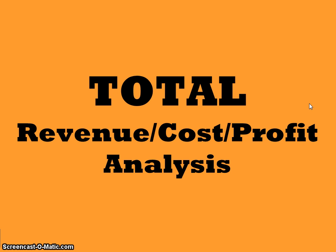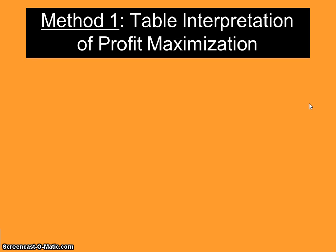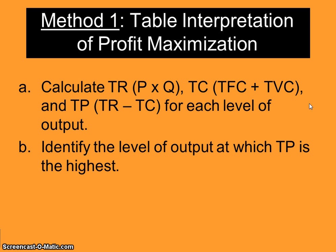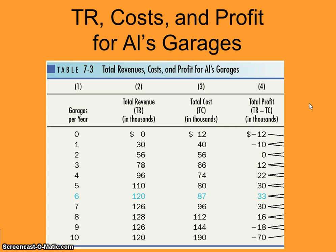Method number one is total revenue, cost, and profit analysis — the table interpretation. With this method, you calculate total revenue, total cost, and total profit for each level of output, and identify the level of output with the highest total profit. You're just doing calculations in a table.